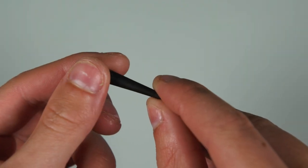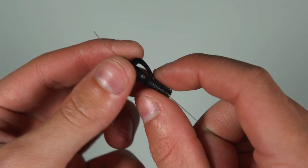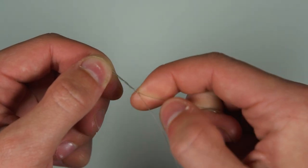Start off by threading the tail rubber and lead clip onto your main line. Next tie on a size 8 swivel.